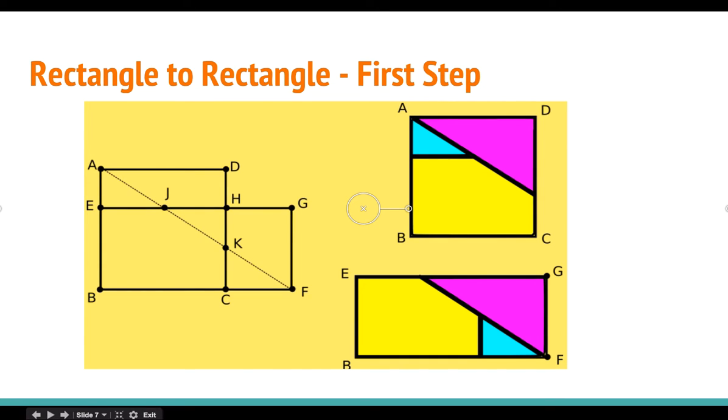Okay, next I'll talk about how to transform a rectangle into a square. So let's consider our starting rectangle EBFG and our resulting square is ABCD.